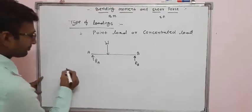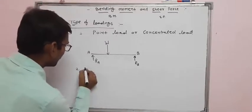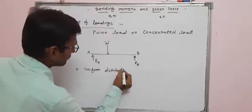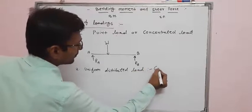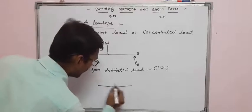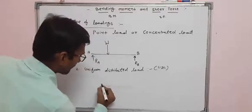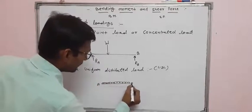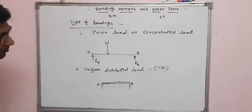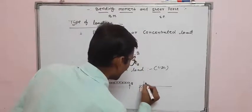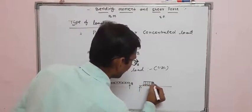The second type of load is Uniform Distributed Load, or UDL. In UDL, the load is distributed uniformly across the beam. It can be shown in two ways in diagrams — either as a shaded block or as small arrows packed together over the beam length from A to B.